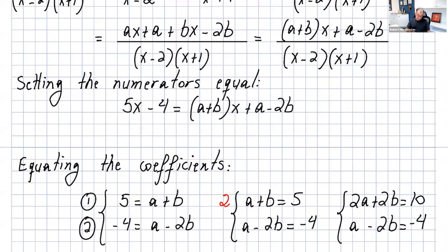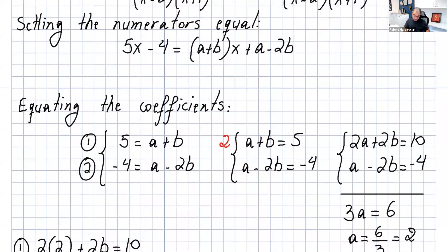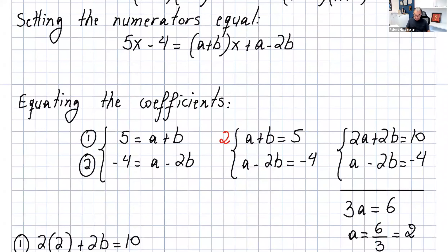So you can say 5x minus 4 equals a plus b times x plus a minus 2b. Then you equate the coefficients. The coefficient of x on the left side is 5 and on the right side is a plus b, so 5 equals a plus b. The constant term on the left is negative 4 and on the right is a minus 2b, so negative 4 equals a minus 2b.